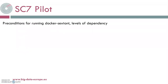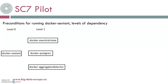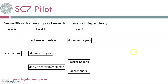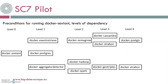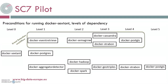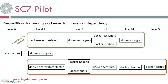We are going to see the levels of dependency among the components. For running Sextant, Docker containers of Event Retrieve, Postgres, and Aggregator Detector should be up and running. For running those, Docker containers of Semagrow, Hadoop, and Spark should also be up and running. Working more towards the backend, Docker containers of Cassandra, Strabon, and GeoTriples should be up and running. And for supporting them, Docker containers of PostGIS should also be up and running. In the upper section there are some dockers that support the Event Detection workflow, and below are all the dockers that support the Change Detection workflow.